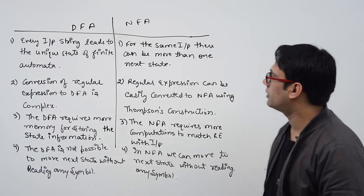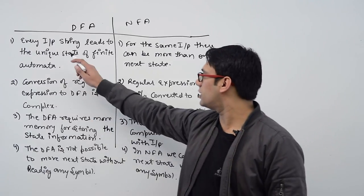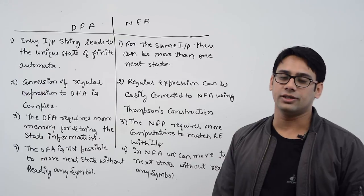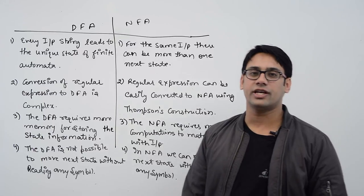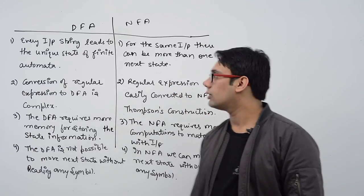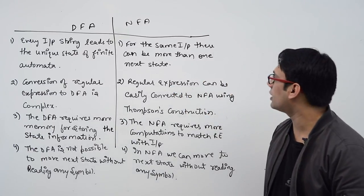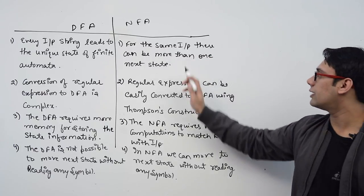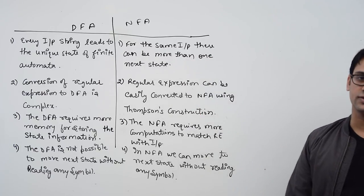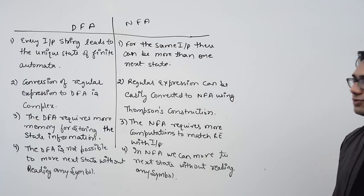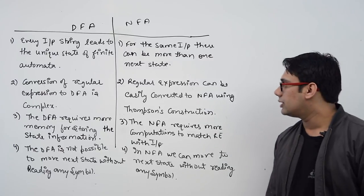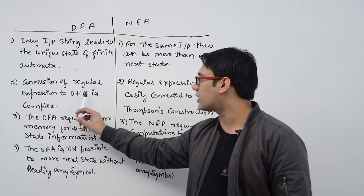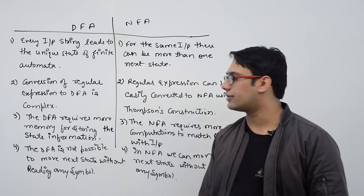In case of DFA, every input string leads to a unique state of finite automata — there is no non-determinism. In case of NFA, for some inputs there can be more than one next state, which you have seen in the previous case. In case of DFA, the conversion of regular expression to DFA is complex.